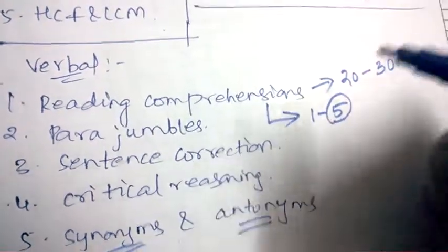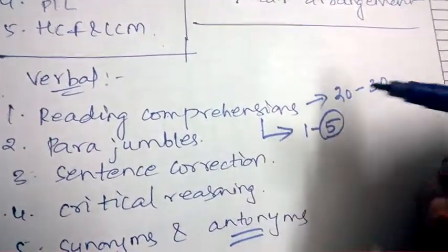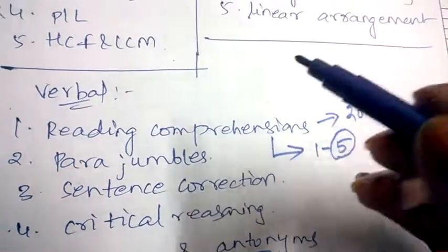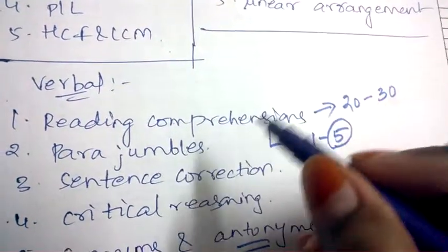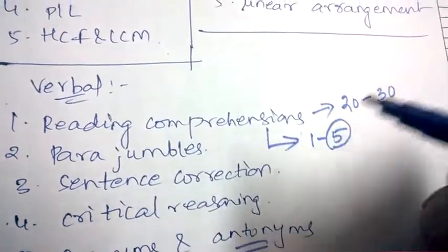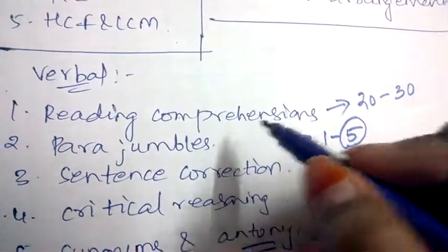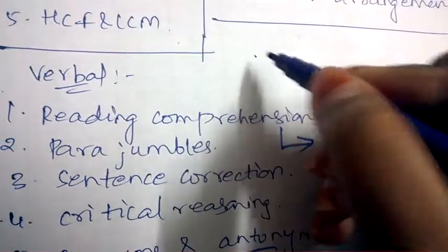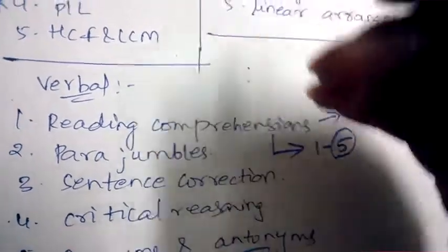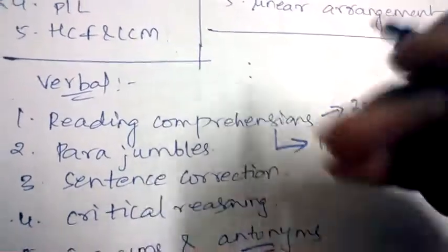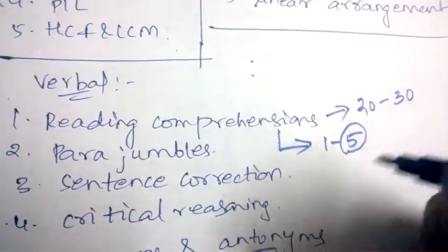Coming to how many paragraphs, like how many reading comprehensions will appear in the exam, depends upon the company which is conducting. If it is Amcat, eLitmus, or CoCubes, these are the three different companies which will conduct the exam, so it depends upon individual pattern.